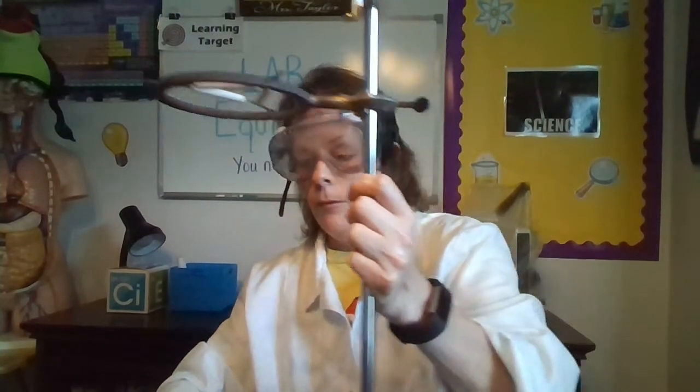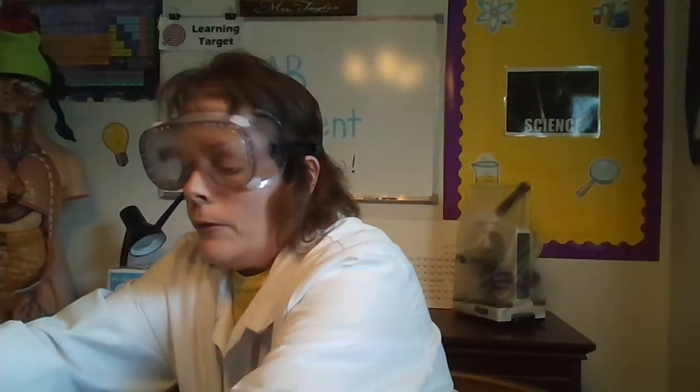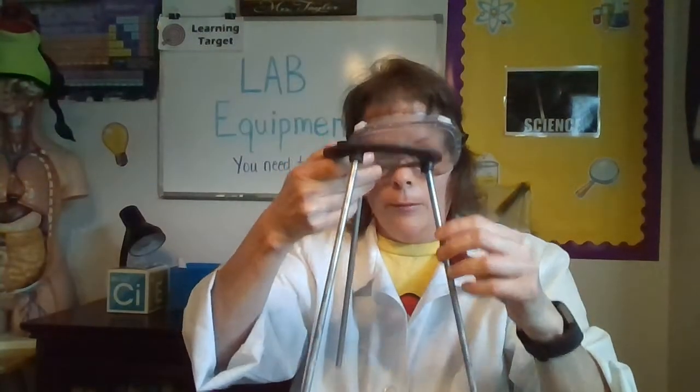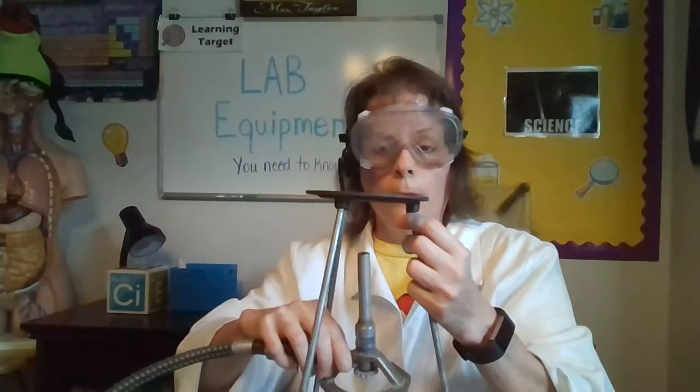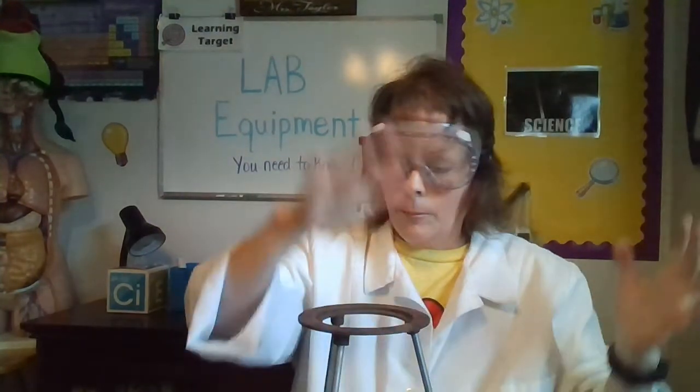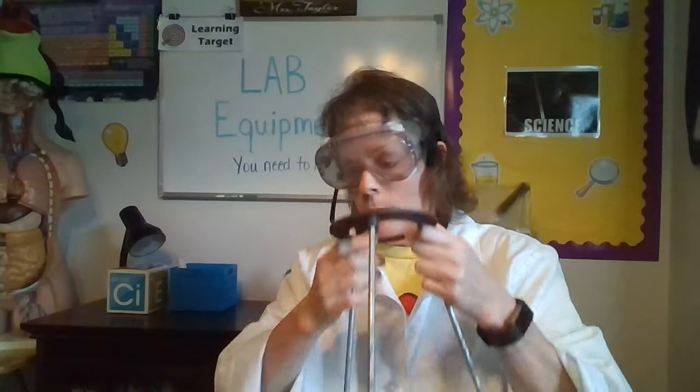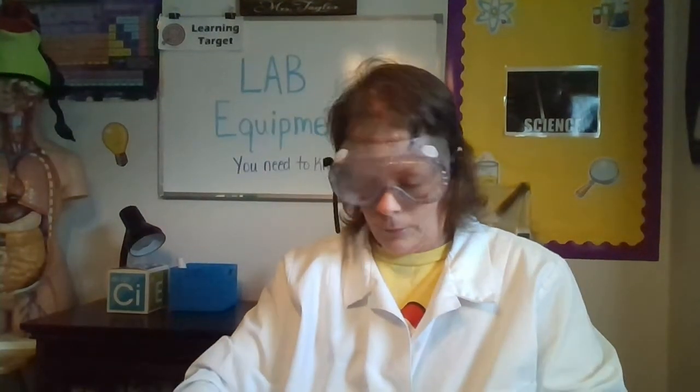Here's another piece of equipment that's kind of like the ring stand. You can put your Bunsen burner under it and you can heat again. You put the gauze on top if you need to, so you can still heat up substances that way.